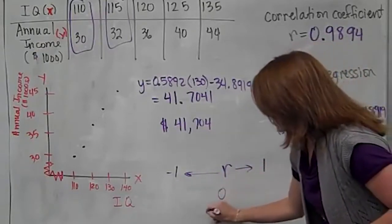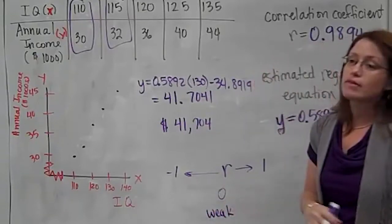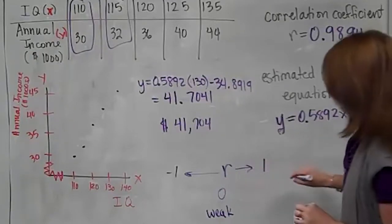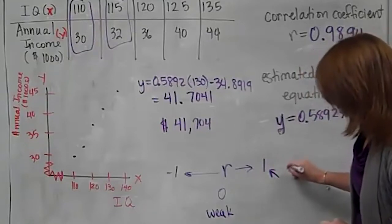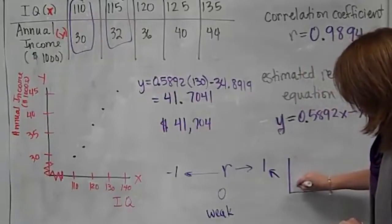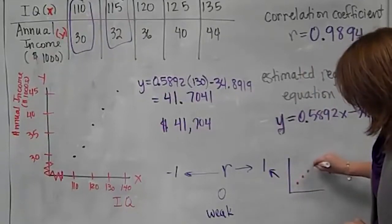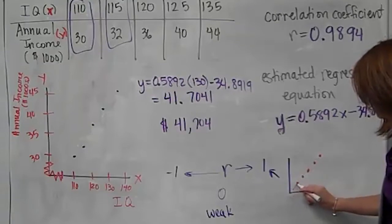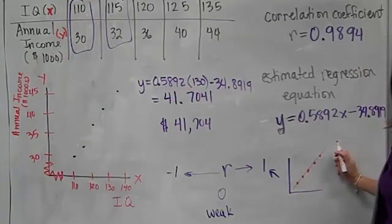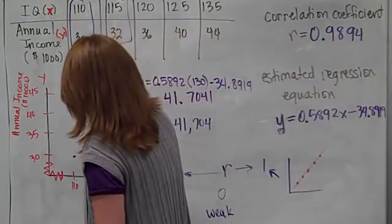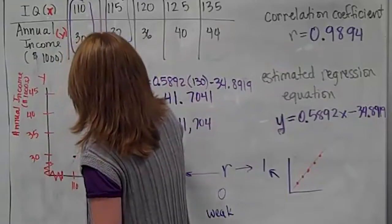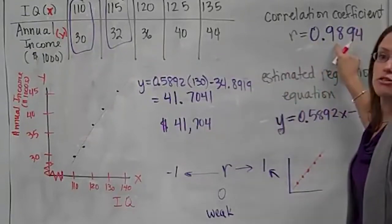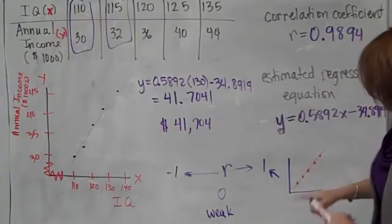You will never see R bigger than 1, anything like 1.5 or 38. You'll never see those. They don't exist. You'll never see anything smaller than negative 1. Same reasons, but anything between these two numbers you can get. If you're closer to 0, that is very weak. You don't have a line pattern jumping out at you. If you are exactly 1, this is the picture you have. Do you notice that all the points, if I was to draw the line, fall on the line?